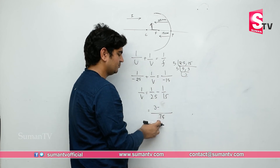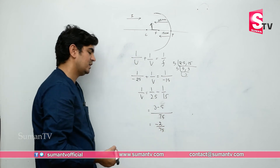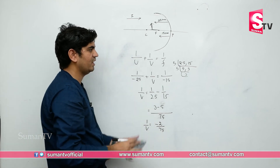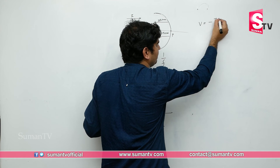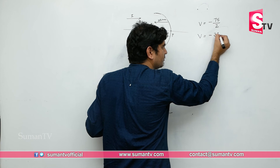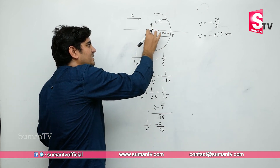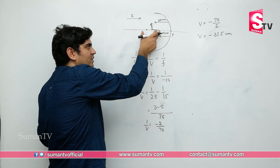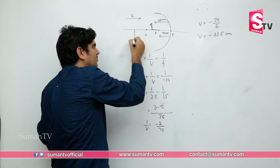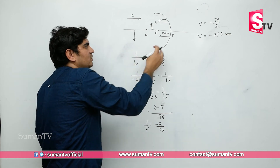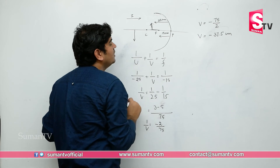Taking LCM of 75: 1/v = 3/75 − 5/75 = −2/75. So 1/v = −2/75, and taking the reciprocal gives v = −75/2 = −37.5 centimeter. From the ray diagram, if the object is in between F and C, the image forms beyond C. Here 37.5 cm is indeed beyond C which is at 30 cm, so the answer is correct.